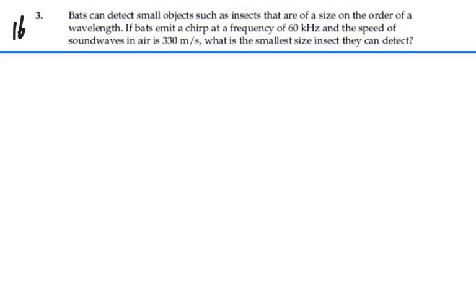Here's problem 16.3. Bats can detect small objects such as insects that are on a size on the order of a wavelength. If bats emit a chirp at a frequency of 60 kilohertz and the speed of sound waves in air is 330 meters per second, what is the smallest size insect they can detect?